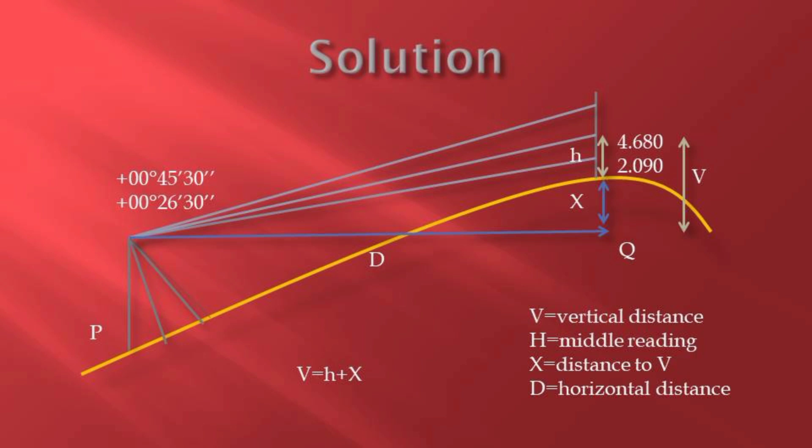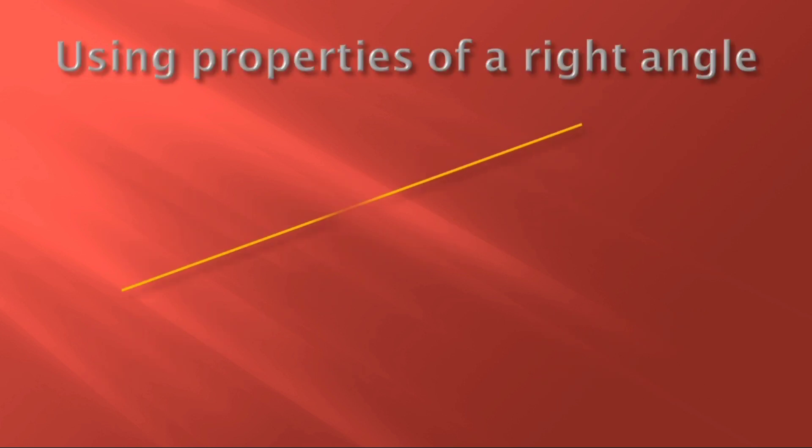So I have written V is equals to H plus X. H that is the mid distance, X that is the distance remaining us to complete the full vertical distance. By using properties of a right angle triangle, remembering we have been given two angles there targeted on the same station.